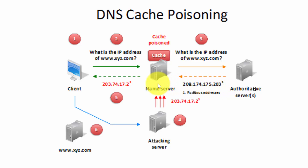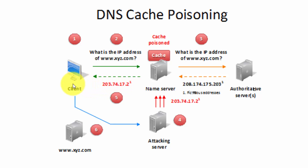However, once it gets to the name server, because it's cached and poisoned, this IP address is going to be sent back to the client instead of the real one. So the client gets the 203.174.12.2 IP address. Little does he know that when he goes to the site, he is going to the attacker's server instead and not the legitimate server. And that's all because the DNS cache was poisoned.